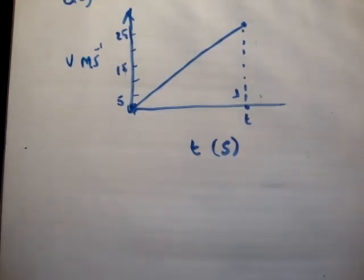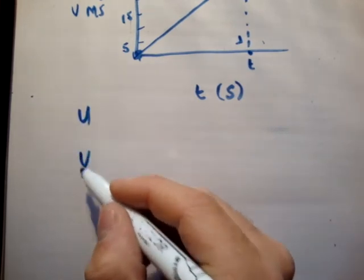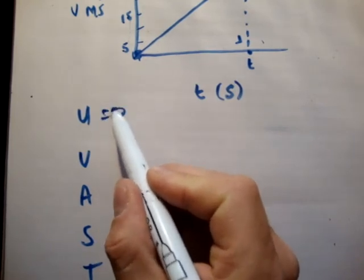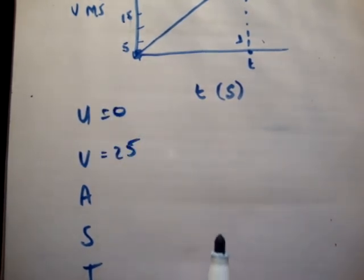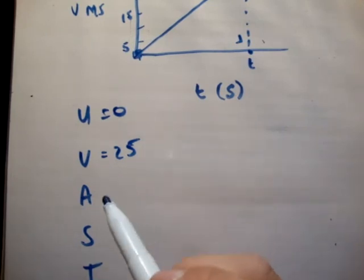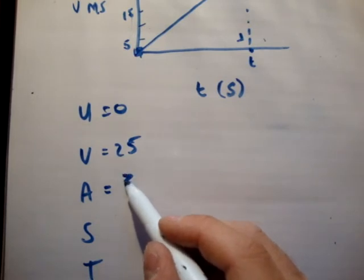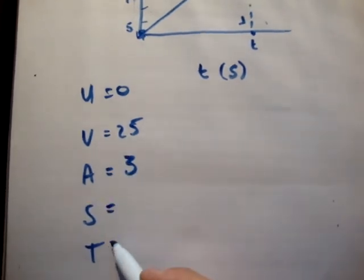So what do we do? We begin with our U-V-A-S-T formula. So we have U, V, A, S and T. Our initial velocity is equal to 0. Our final velocity is equal to 25. Our acceleration, I keep saying velocities and I mean to say speeds. Our acceleration is 3 meters per second squared. Our distance is unknown and our time is unknown.